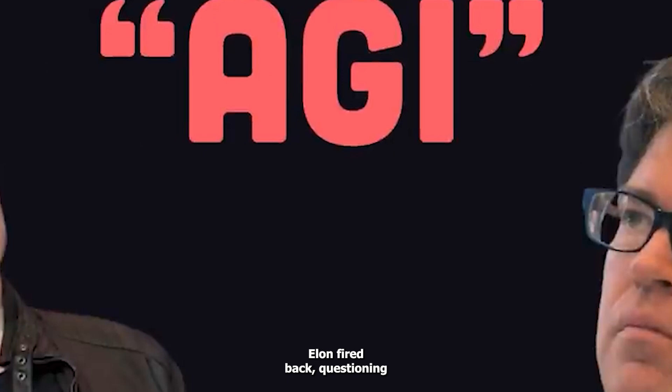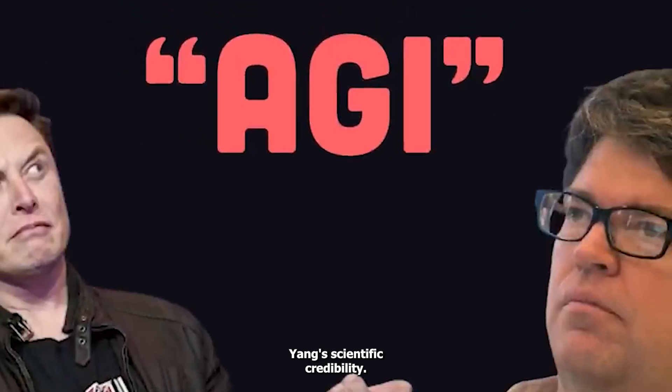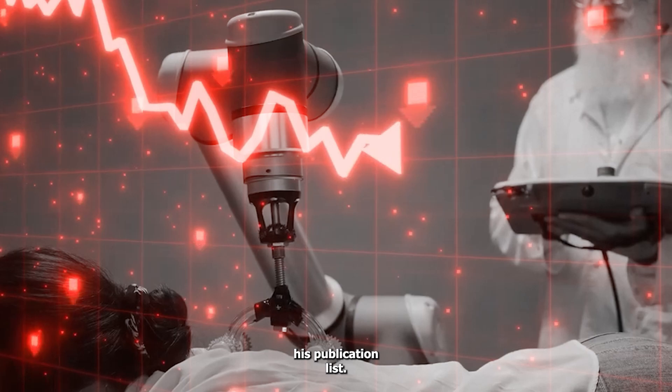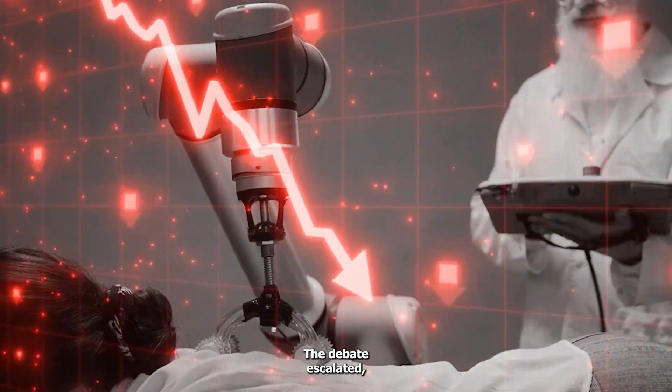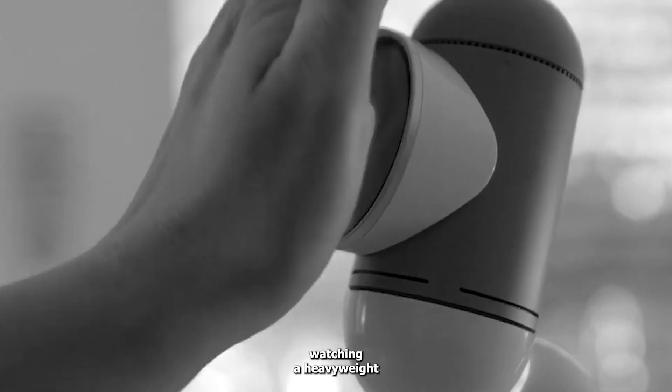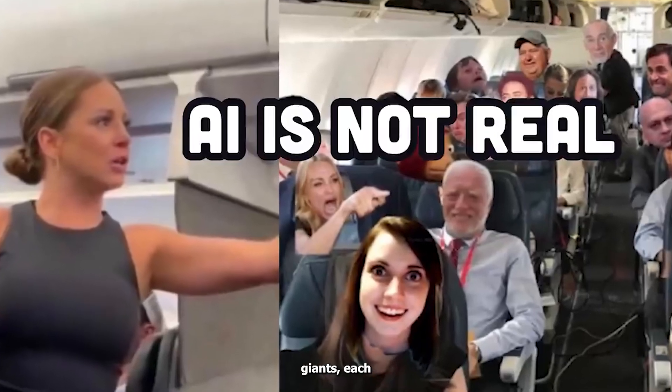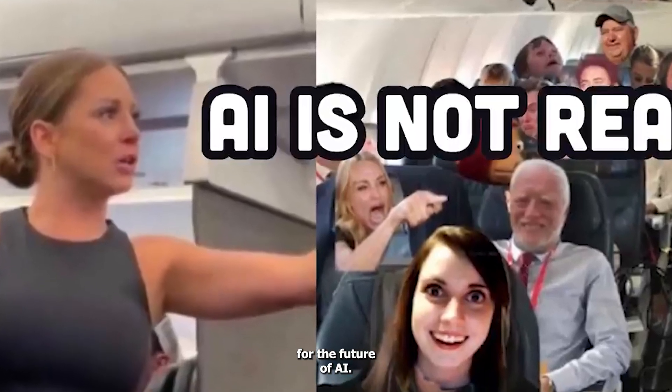The ensuing debate was one for the history books. Elon fired back, questioning Yang's scientific credibility, while Yang began bragging about his publication list. The debate escalated, and it was like watching a heavyweight battle between two tech giants, each defending their own vision for the future of AI.